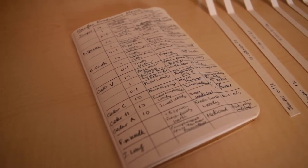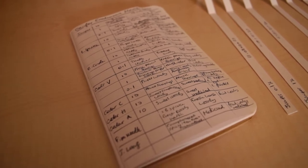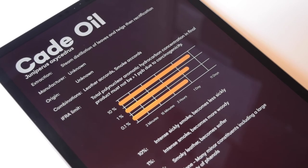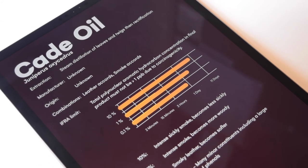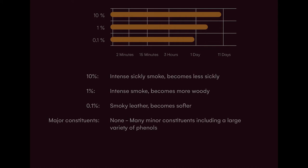So how does it smell? Well, at a high concentration it is intensely smoky, actually just way too smoky, so much that it's sickly. But as you go down in concentration, it does become a bit more palatable, a bit more leathery and a bit softer. Also, when you leave it over time on the scent strip, it also becomes a bit more mellow and a bit softer.